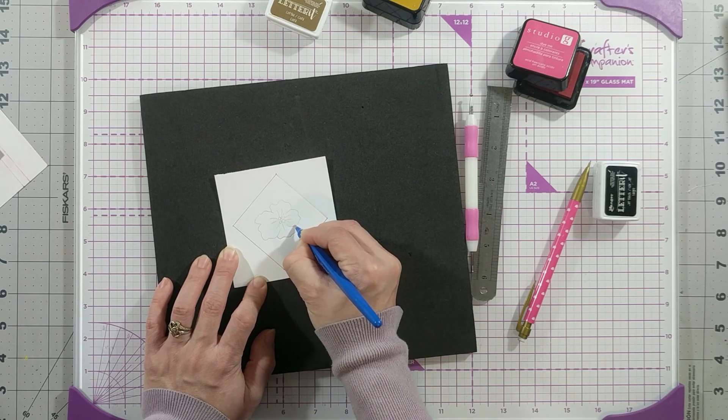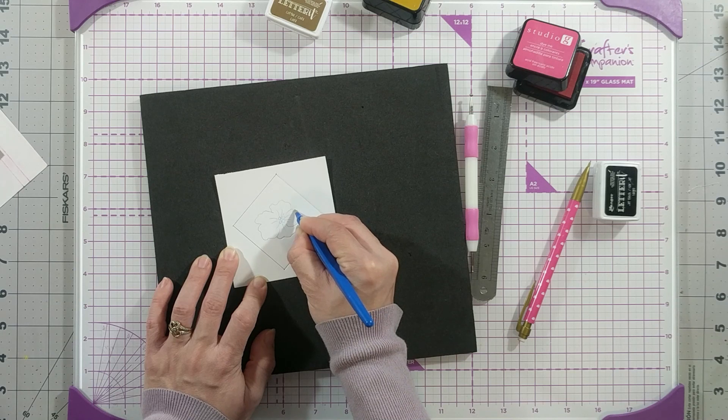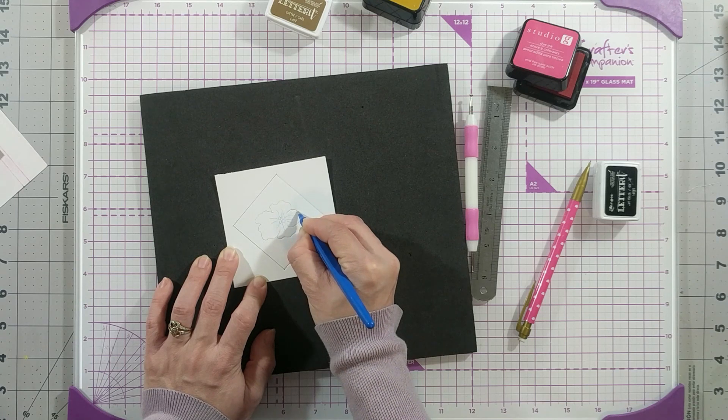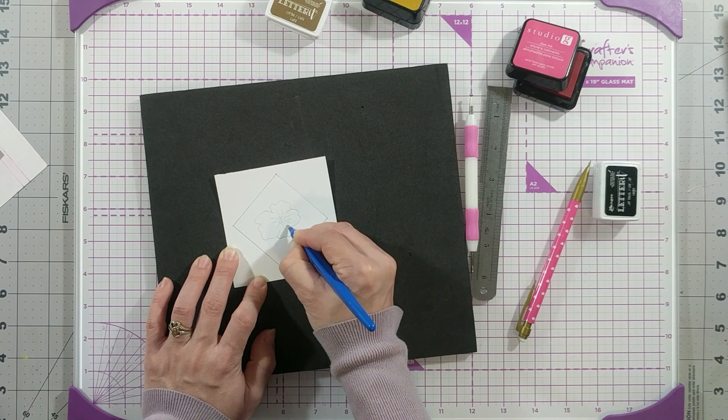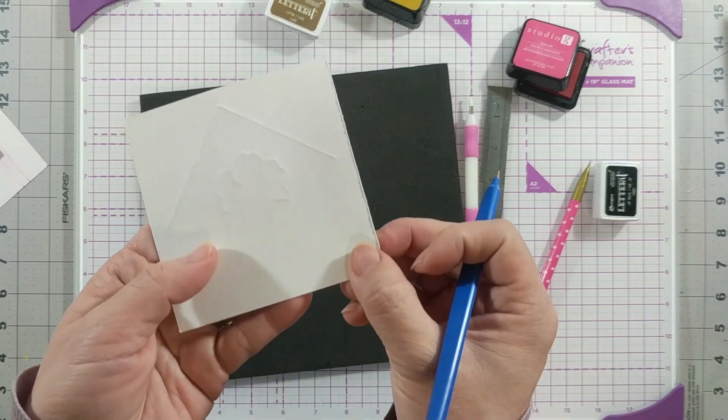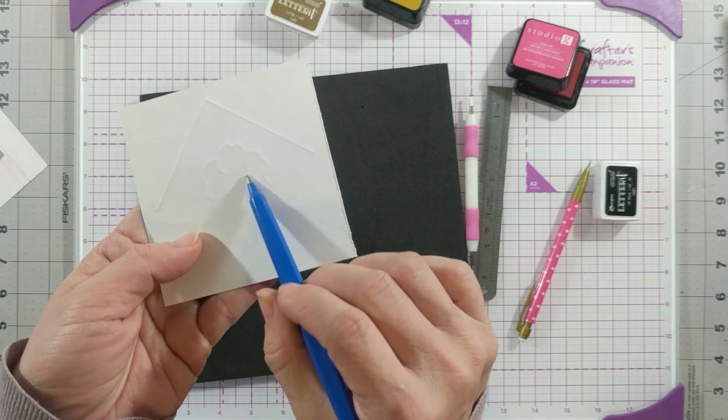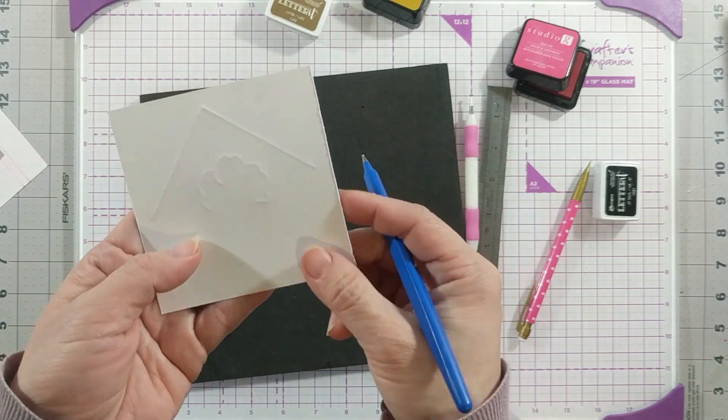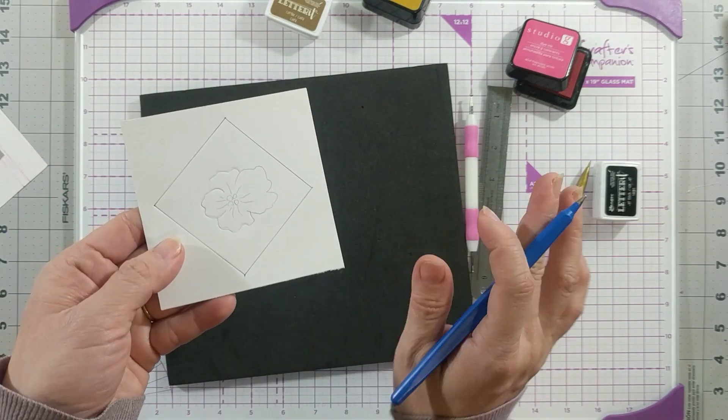And as usual, don't use too much force. Just be gentle and just run it over and over until you are happy with the depth of the embossing. Here you can see the flower shape started to come along, and I will speed up and finish this.